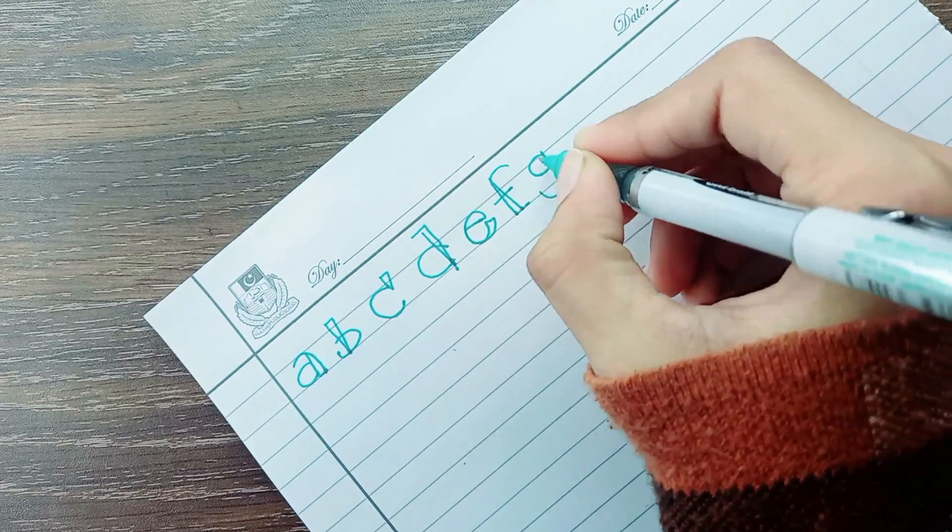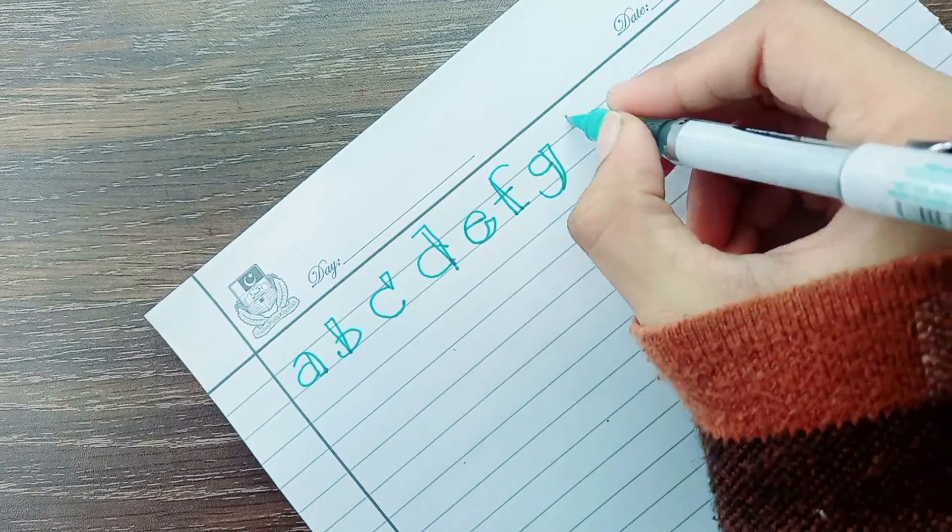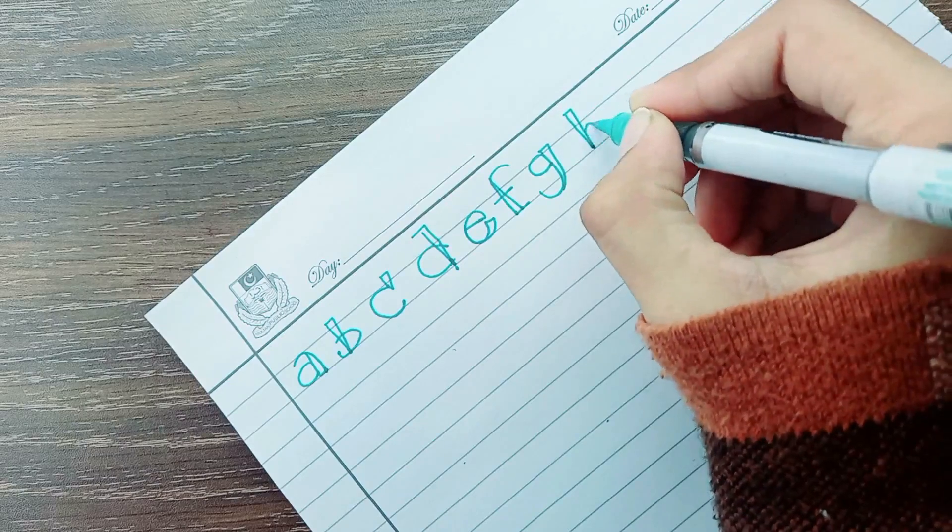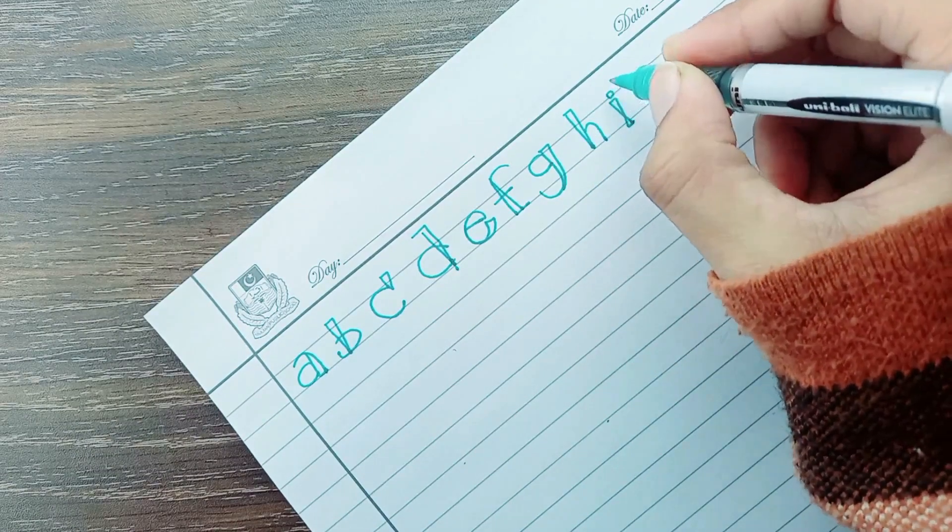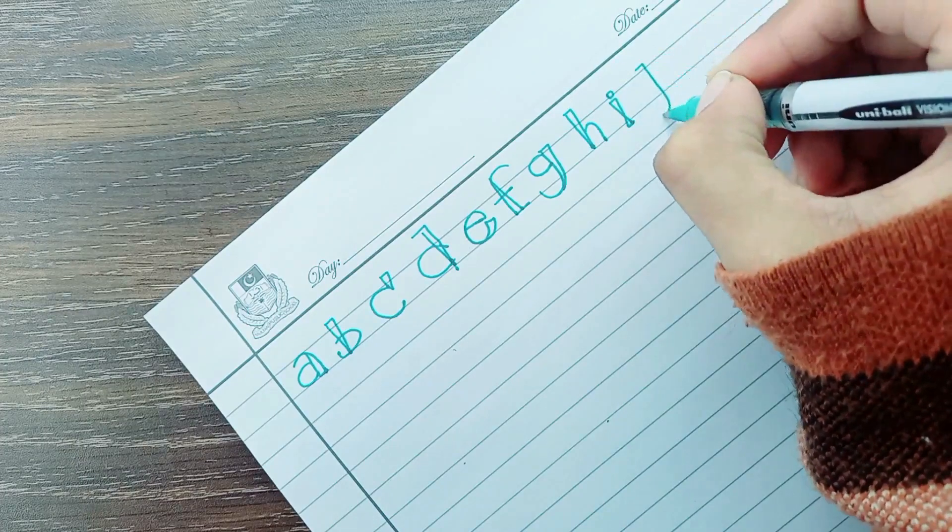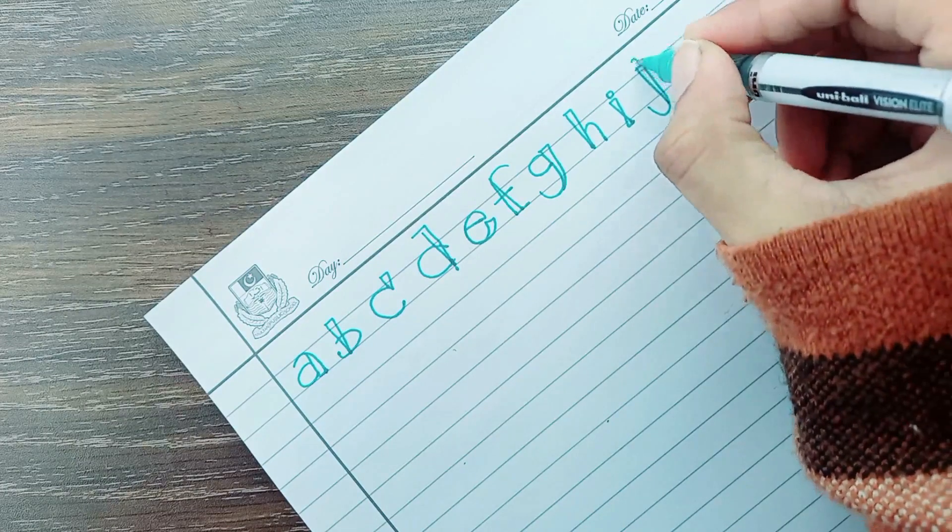G. G for goat. H. H for house. I. I for ink. J. J for jug.